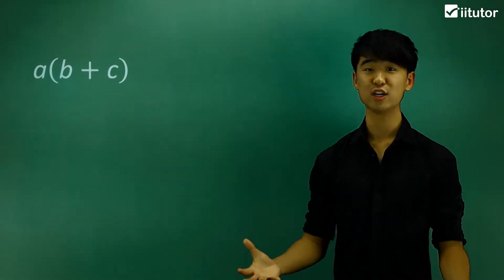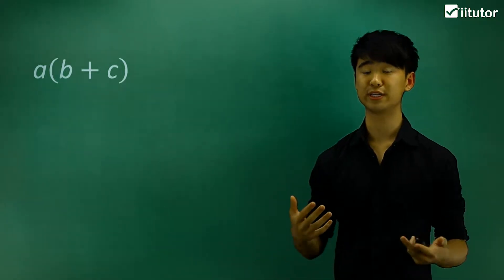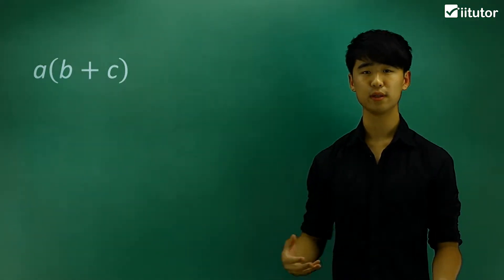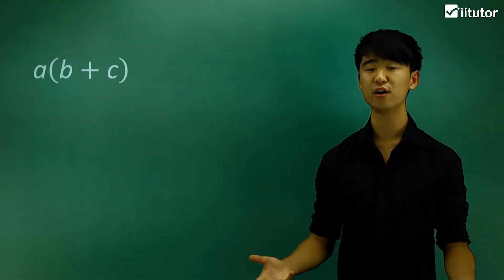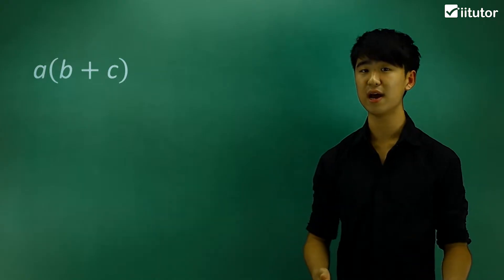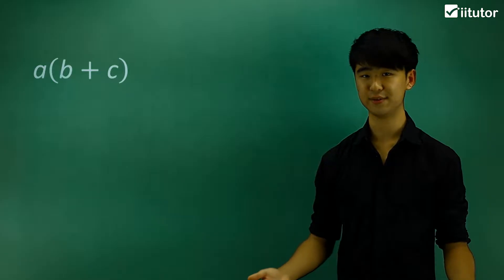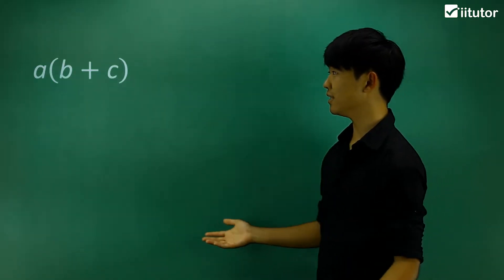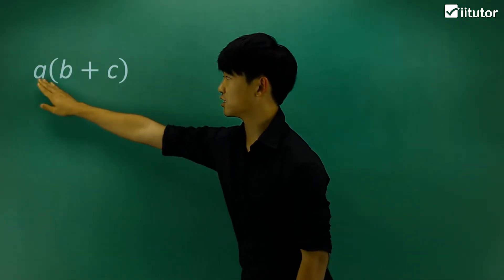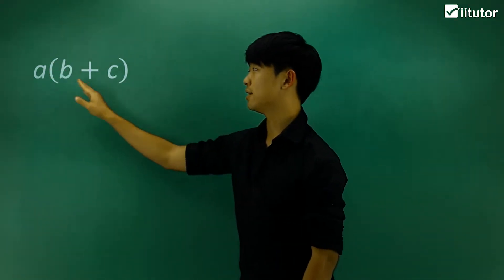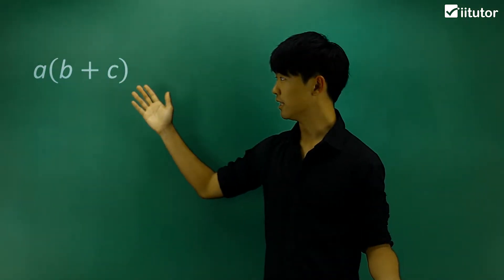We're going to be working on our algebraic skills. In particular, we're going to be learning about how to expand expressions. Expanding might not feel familiar right now, but once we apply it and work on some questions, it should come to you very easily. Expanding occurs when we have some number multiplied by a bracket that has two other numbers in there, and we can effectively expand this expression.